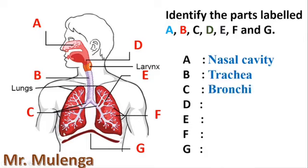Then the part labeled D right here, this is called the pharynx. Then the part labeled E, these are the bronchioles.